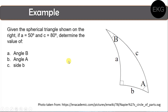Now for an example applying both rules. Given the spherical triangle shown, if side a equals 50 degrees and side c equals 80 degrees, determine the value of angle B, angle A, and side b. Notice the first property — the sides are in degrees. To solve for angle B using the Napier Circle, the given values are side a and side c. Since these two given parts are adjacent to (90° − B), we will use the sin-tan-ad rule.